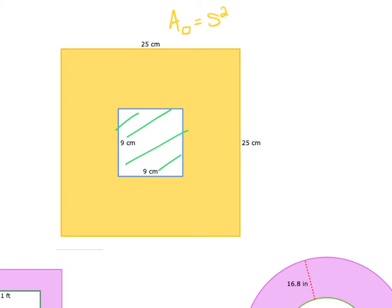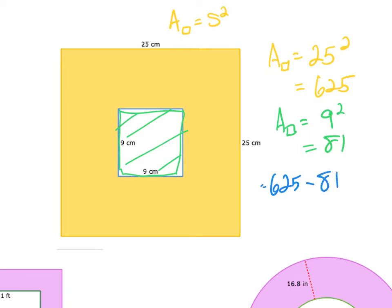To do my area, the area of my square is equal to 25, that side squared. Well 25 squared is 625. My green square here is 9 by 9. So the area of my green square is going to be 9 squared and this is equal to 81. When I figure out the difference here, 625 subtract 81, this is going to equal 544.